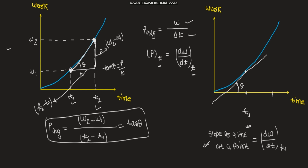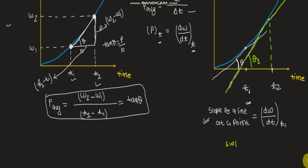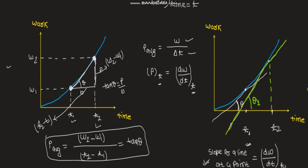If we shift our attention to point t2 and want to find the power at this point, we simply draw a tangent at t2 on the curve. If this tangent makes an angle theta2 with the horizontal, then the slope at t2 equals dw/dt at t2. This is the graphical representation of instantaneous power, and the secant line interpretation is the graphical meaning of average power.